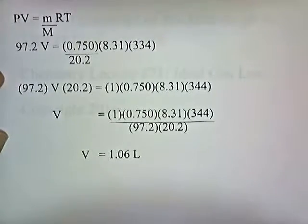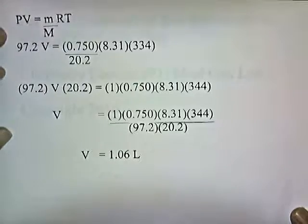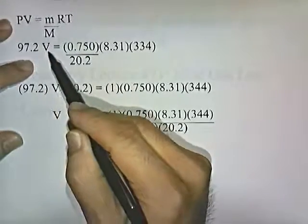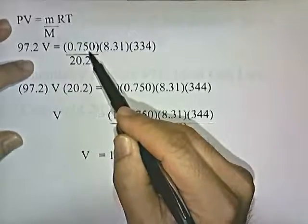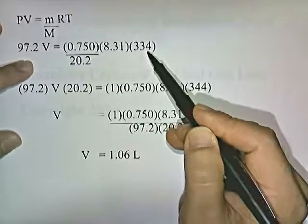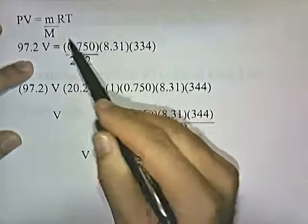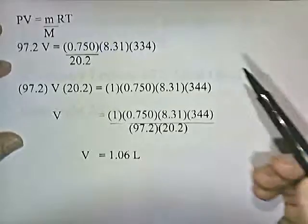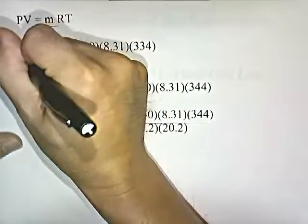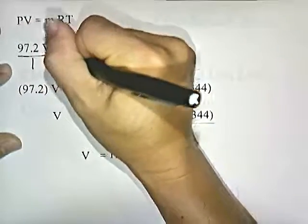So, PV equals little m over big M times RT. P is 97.2, V we don't know, little m is 0.75, R is 8.31, temperature is 334 Kelvin, and capital M is 20.2. To get V by itself, we can cross-multiply. I can put this over 1, and then we cross-multiply.